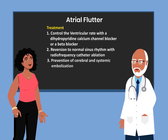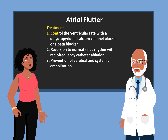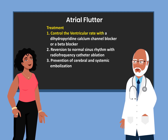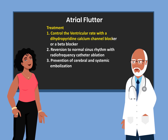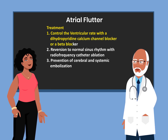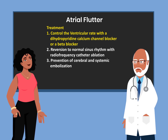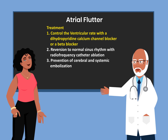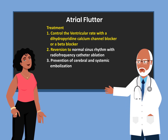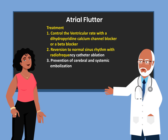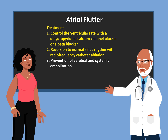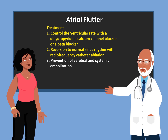What is the treatment for atrial flutter? First, try to control the ventricular rate with a dihydropyridine calcium channel blocker or a beta blocker. In some instances, providers may choose to use amiodarone, which is an excellent drug for just about any type of arrhythmia. If that doesn't work, then the patient should probably be subjected to radiofrequency catheter ablation, which would most times restore the rhythm to normal sinus rhythm.